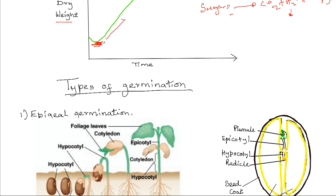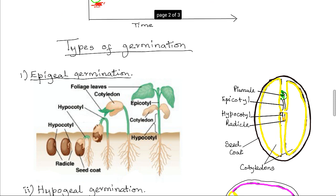The first type is known as epigeal germination. In this type, the cotyledon is carried up and out of the soil, forming the first photosynthetic structure of the plant. It is brought about by the rapid elongation of the hypocotyl. For example, in the common bean, the cotyledons are brought above the soil through rapid elongation of the hypocotyl.